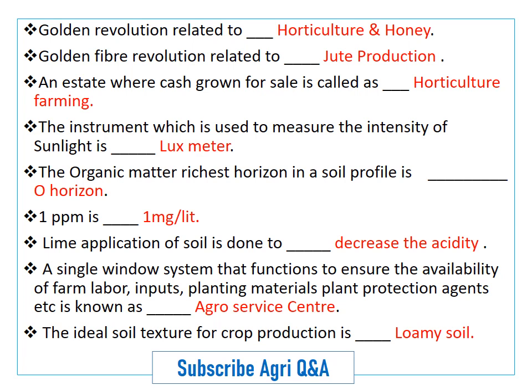The instrument used to measure the intensity of sunlight is a lux meter. The organic matter richest horizon in a soil profile is the O-horizon.